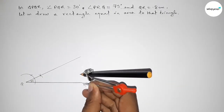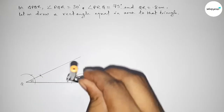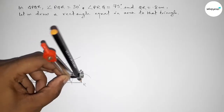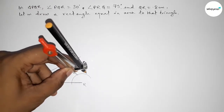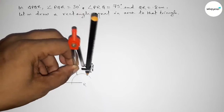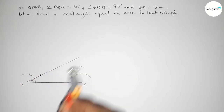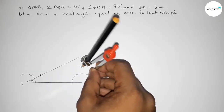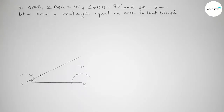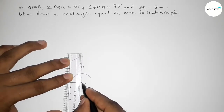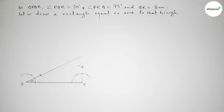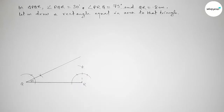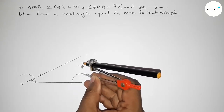Next, we have to draw a 75 degree angle on the point R. Using the compass, taking any length and drawing an arc. Putting the compass here, taking the same length, cutting here, and drawing an arc here. Putting the compass here and cutting here — first drawing a 90 degree angle. So this is 90 degrees.